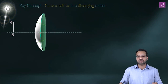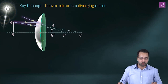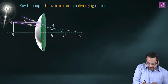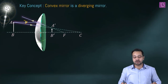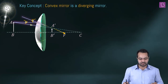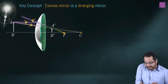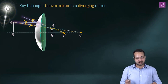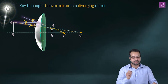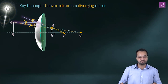We trace rays for a convex mirror. A ray parallel to the principal axis reflects and appears to come from the focus. A ray directed toward the center of curvature is normally incident and reflects back in the same direction. The intersection of these reflected rays gives image A'B', which is upright.